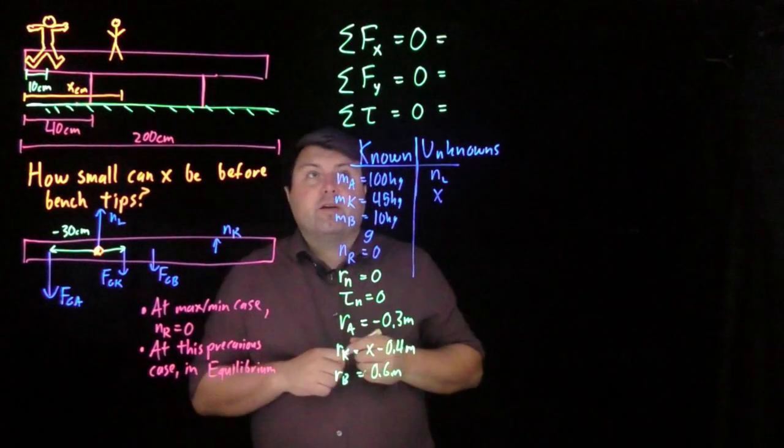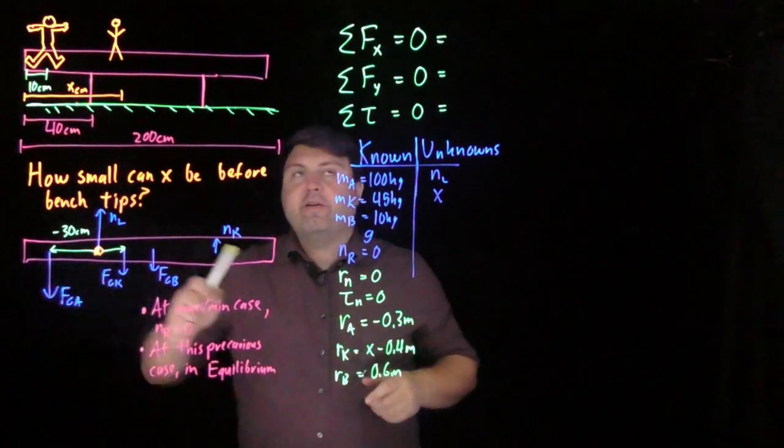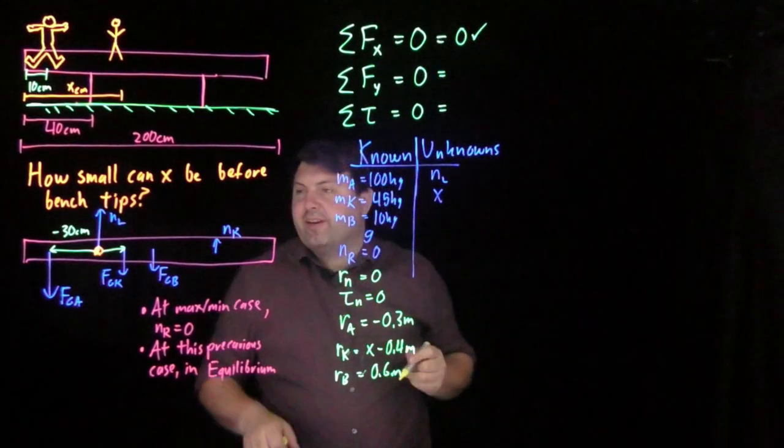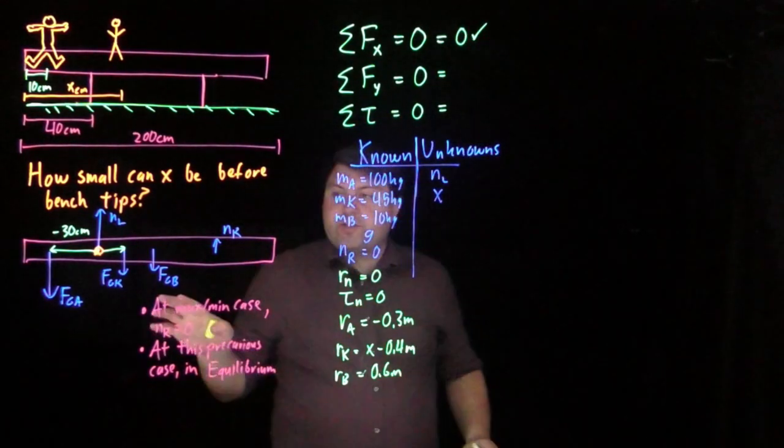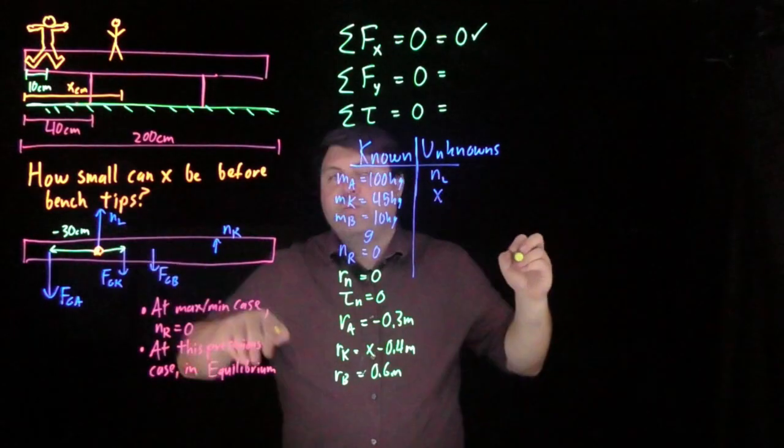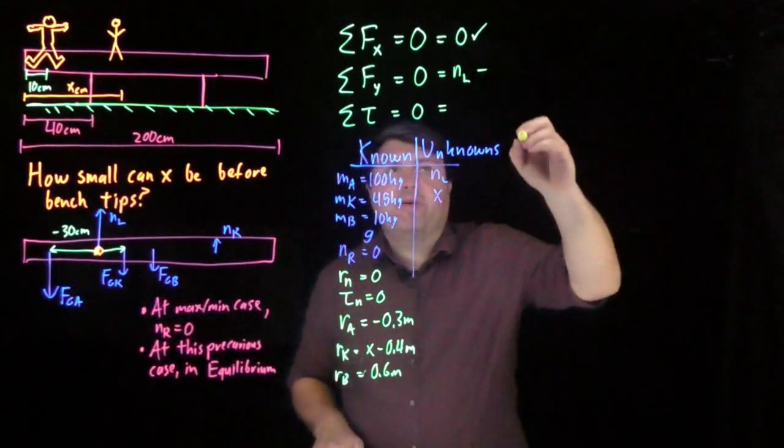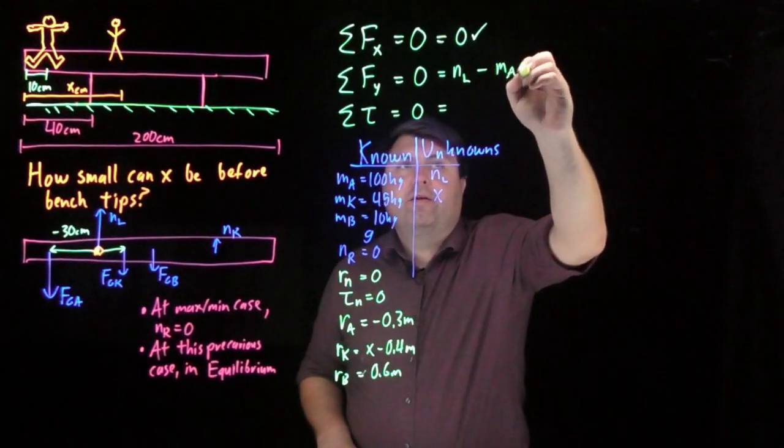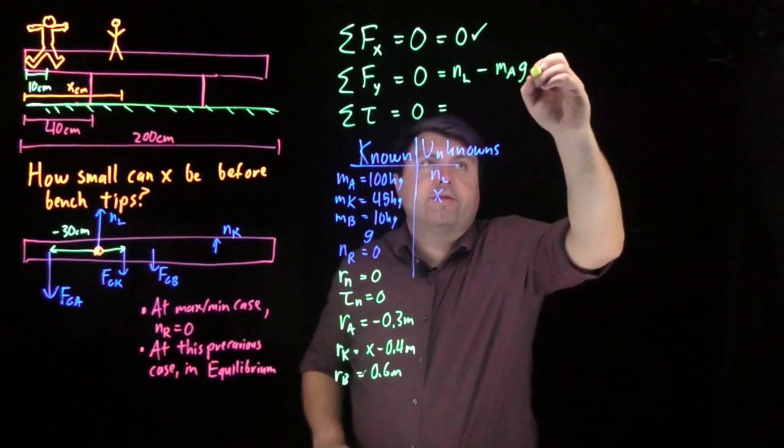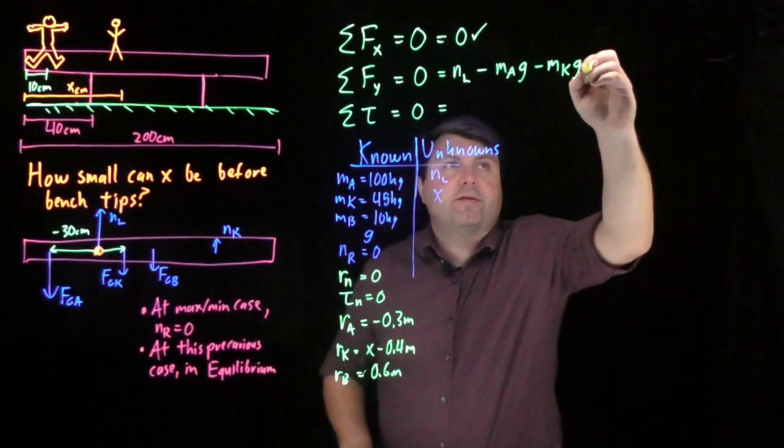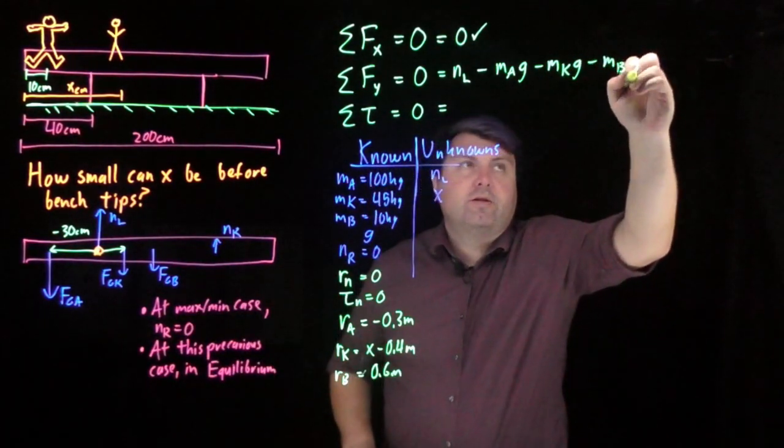So the cool thing about our free body diagram is that our sum of our force in the x is zero. So that checks everything off nicely. Sum of our forces in the y is going to be our normal force from this leg minus mass of a times g minus the mass of the kid times g minus the mass of the bench times g.